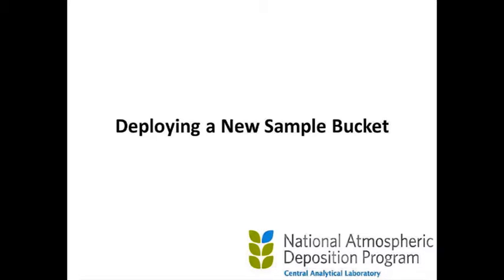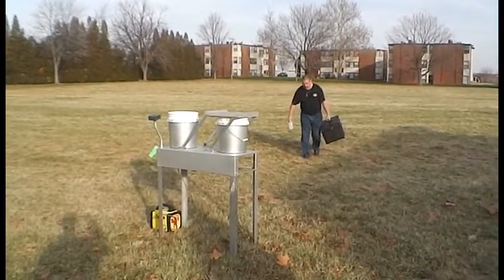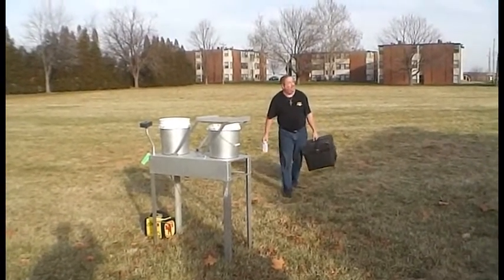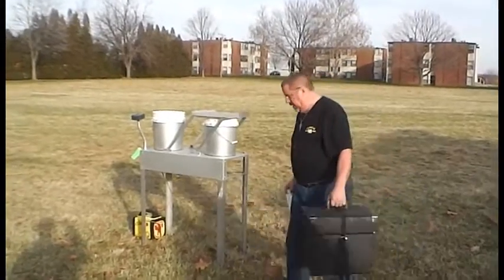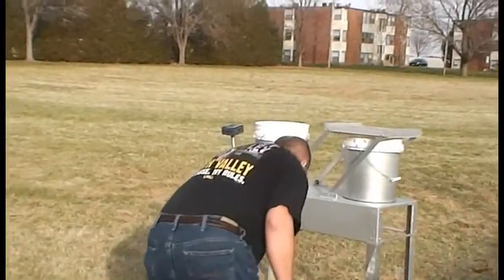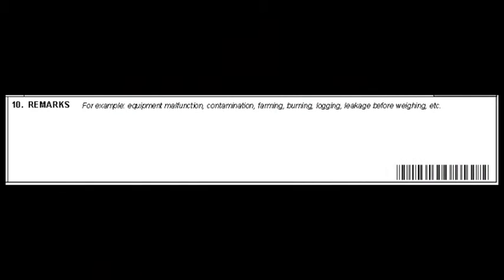We will begin by retrieving the deployed sample bucket from the field. The operator will approach the site from the downwind side — that is the side facing the wind — to reduce potential sample contamination. If snow or ice is present on the collector lid, please brush it off before proceeding. To avoid excessive sample contamination, we suggest keeping a bagged, used NADP bucket lid to remove significant accumulation.